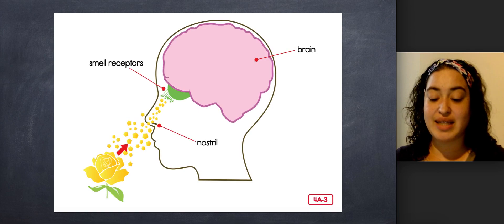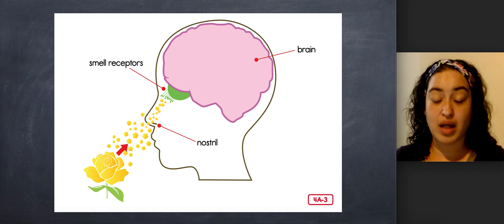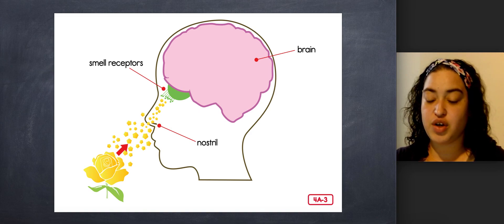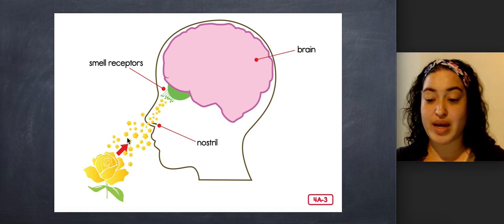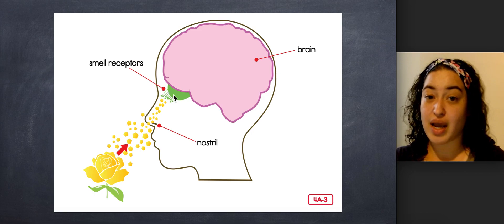People can identify a huge number of different kinds of smells and odors, between 4,000 and 10,000. This is because we can tell the difference between that many different odor molecules. So here you can see the odor molecules from the flower going in through your nostrils and onto the smell receptors, which tell your brain what smell or scent you're smelling.